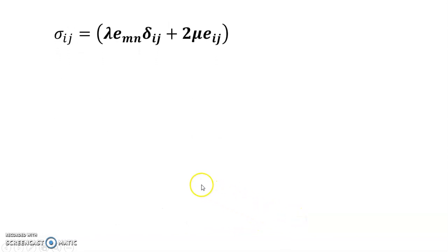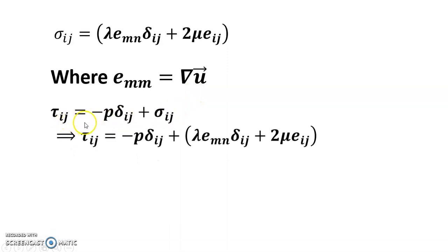So friends, sigma_ij equals lambda e_mn delta_ij plus 2 mu e_ij, where e_mm equals the gradient of u. So I can write tau_ij equals minus p delta_ij plus sigma_ij.